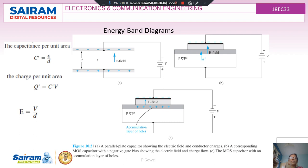Similar to the parallel plate capacitor, we can consider our MOS capacitor. The MOS capacitor is a metal oxide semiconductor where the metal and semiconductor act as the two parallel plates separated by the insulating material, which is silicon dioxide. We assume that the substrate or semiconductor material used is P-type.